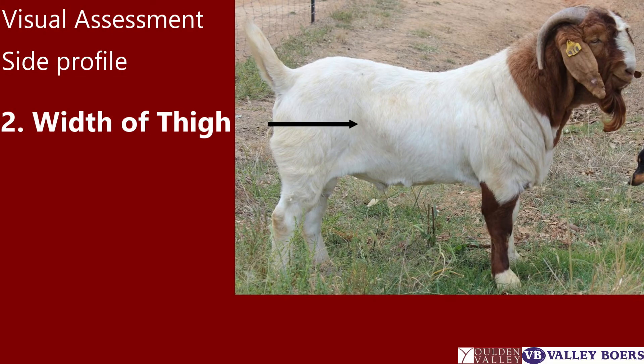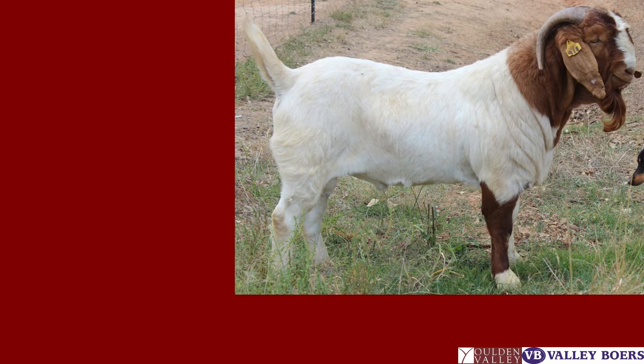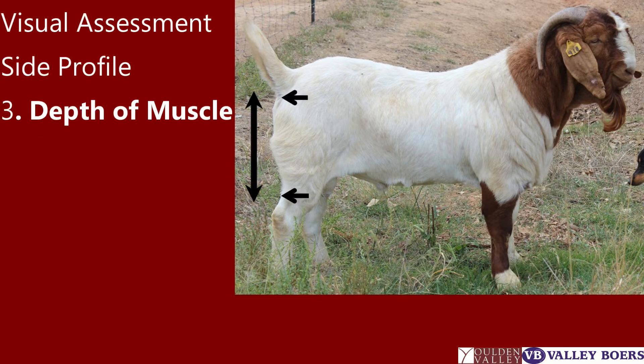The width of thigh — you can often see the outline of where the thigh ends. For depth of muscling, we are looking for it to come as far down towards the hock as possible.